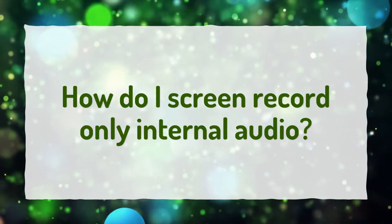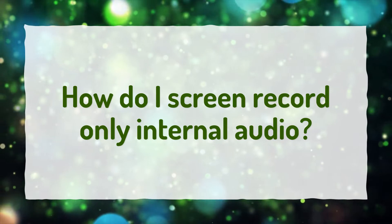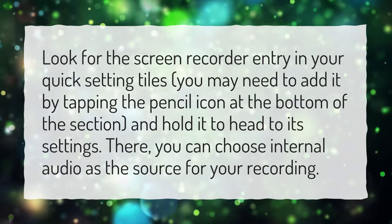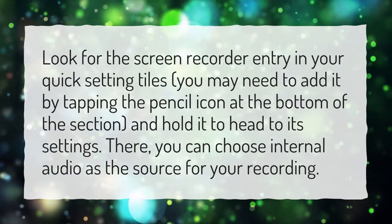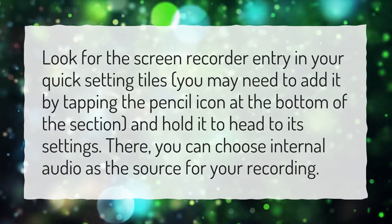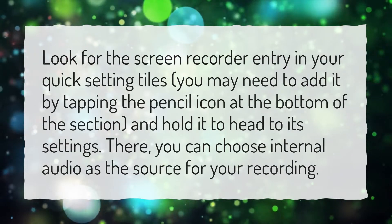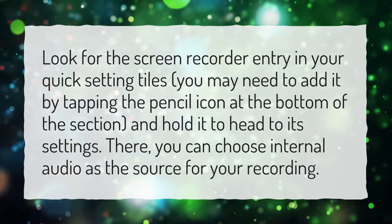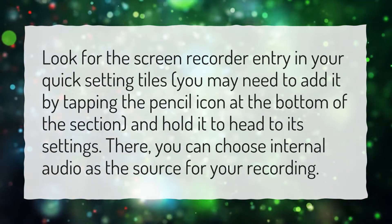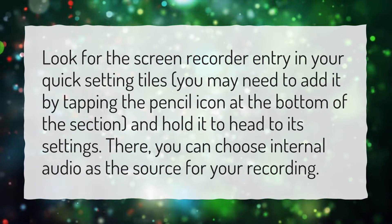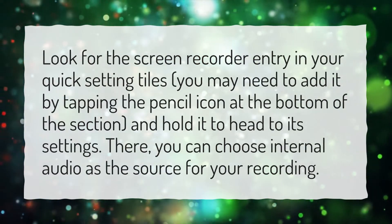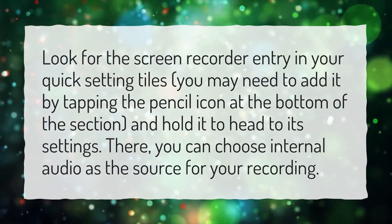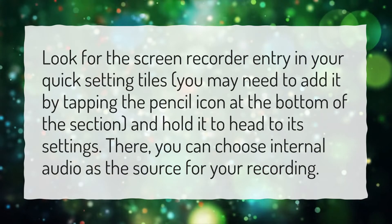How do I screen record only internal audio? Look for the screen recorder entry in your quick setting tiles. You may need to add it by tapping the pencil icon at the bottom of the section, and hold it to head to its settings. There, you can choose internal audio as the source for your recording.